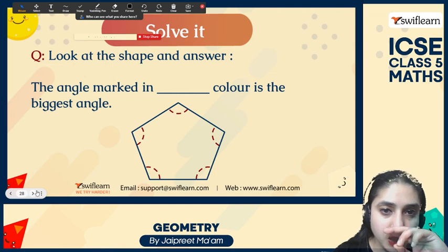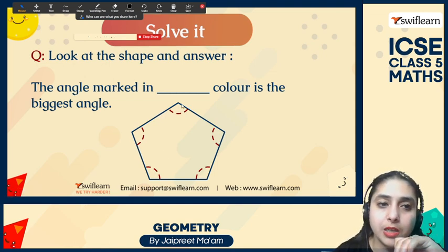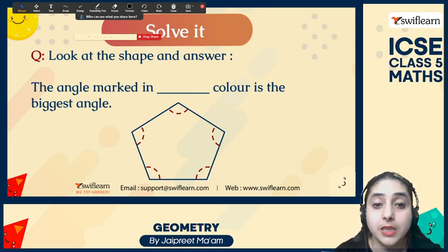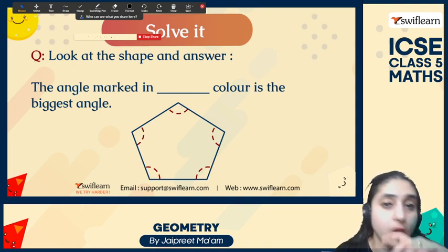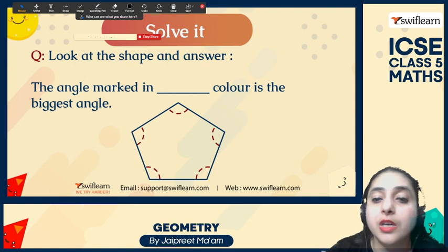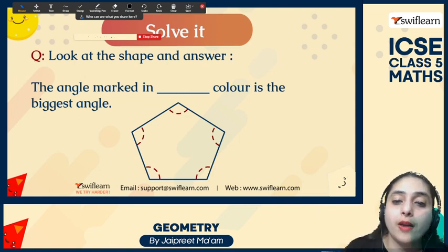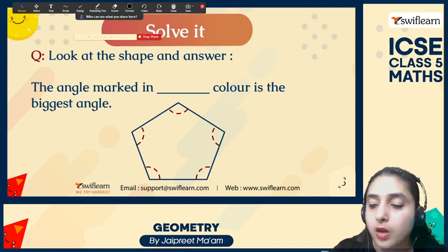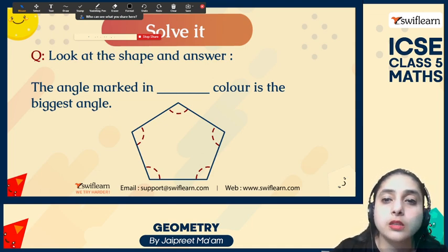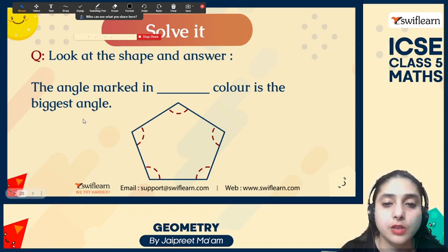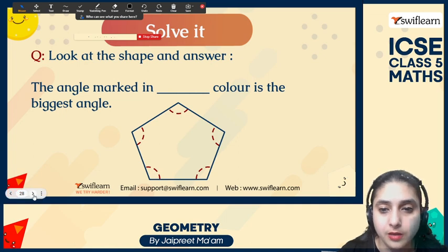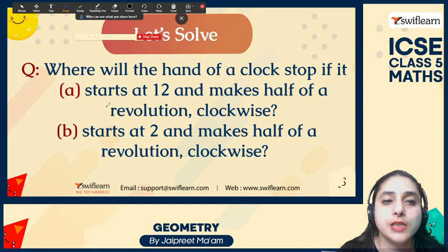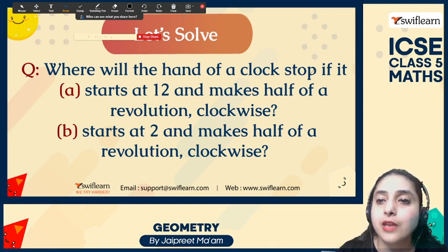The angle marked in a dashed color — which is the biggest angle? To find out, you have to measure it with the protractor and check what the angle marked in dashed color is, then determine which is the biggest angle.